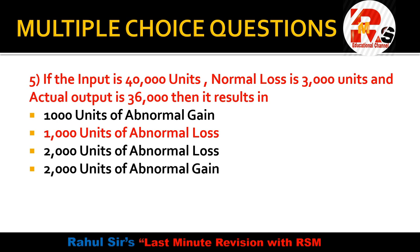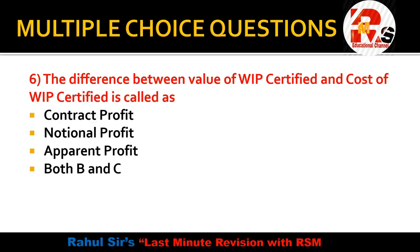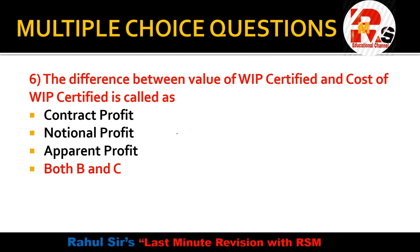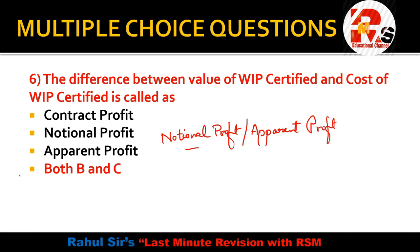Question number 6: The difference between the value of WIP certified (work certified) and the cost of WIP certified — what is it called? Options: notional profit, apparent profit, both B and C, or none of the above. The right answer is both B and C. Notional profit is the balancing figure when a contract is incomplete. It is also called apparent profit — both terms refer to the same thing.